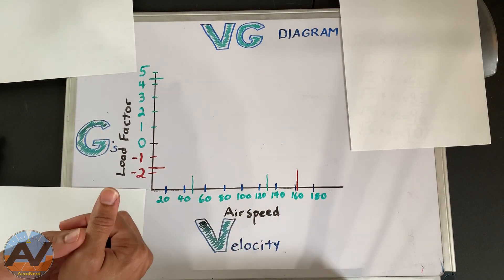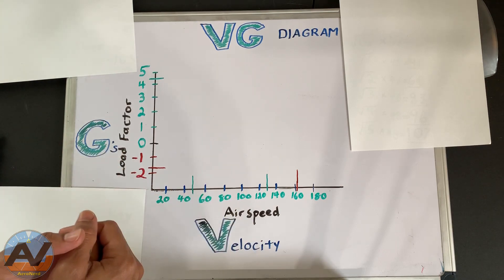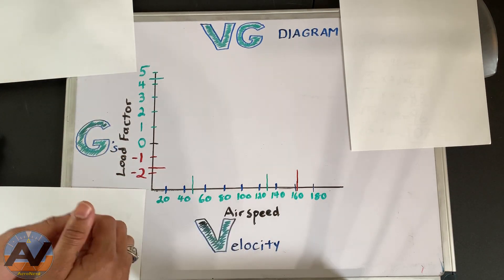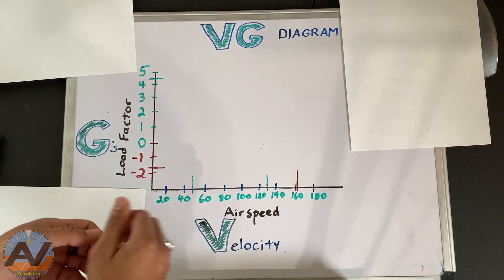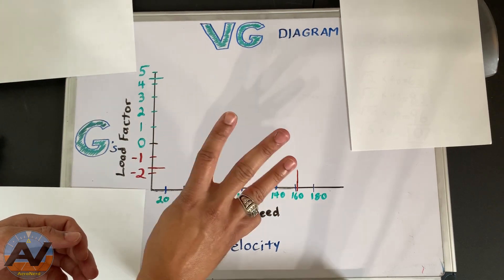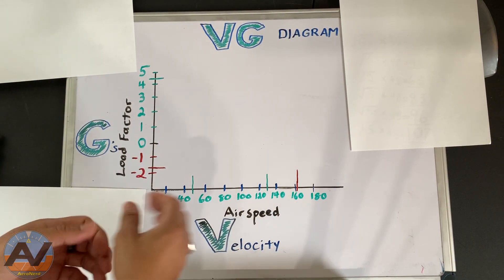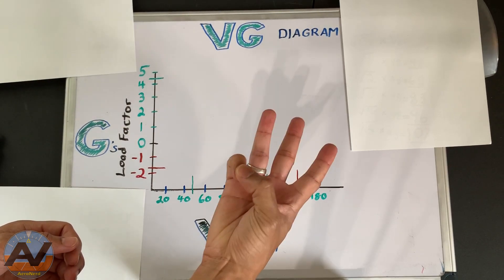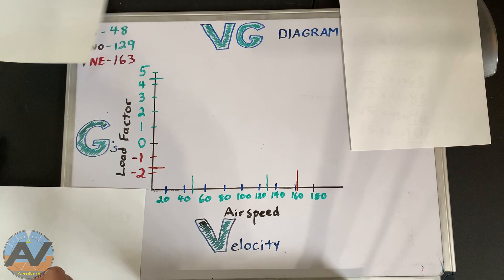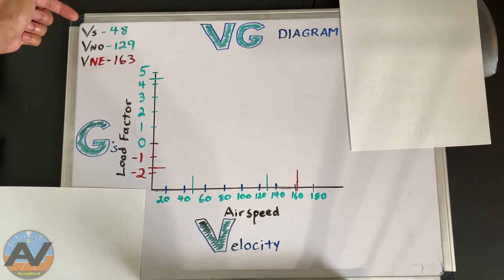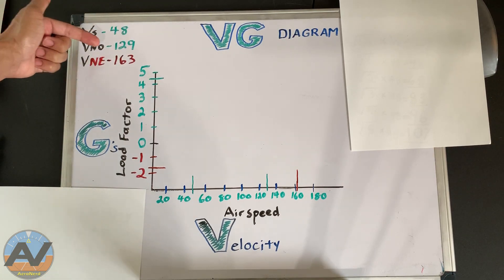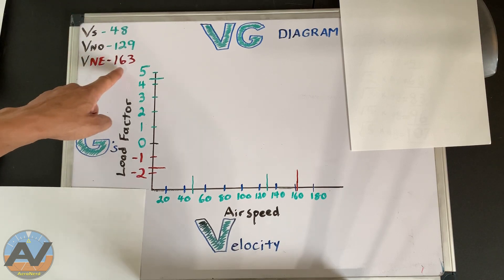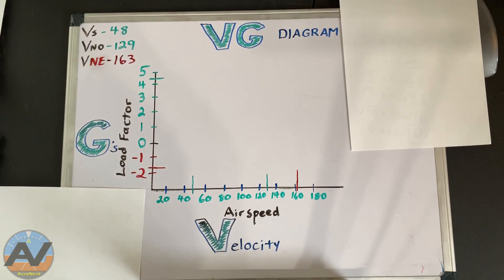So what do we need in order to start the VG Diagram from scratch? First, we need to know what kind of aircraft we're going to be flying. Today we're going to be flying the Cessna 172. You're going to need three things from that 172: the stall speed, the normal operating speed, and the never exceed speed. We've got our stall speed of 48, our normal operating speed of 129, and our never exceed speed of 163.